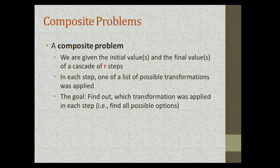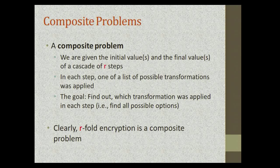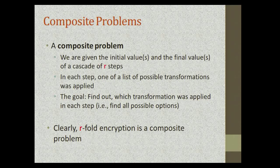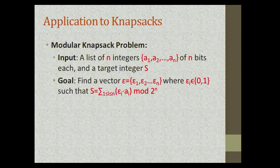A composite problem is defined as follows: we are given an initial value and a final value of a cascade of R steps, and in each step we have a limited set of transformations that can be applied to the value. Our goal is to find which transformation was applied in each step, finding all possible solutions. Clearly R-fold encryption is a composite problem, but not the only one. One more famous composite problem studied for many years is the knapsack problem. We have a list of n generators A1 to An, each of n bits, and a target integer S, and we want to find a subset of the generators which sums to S.